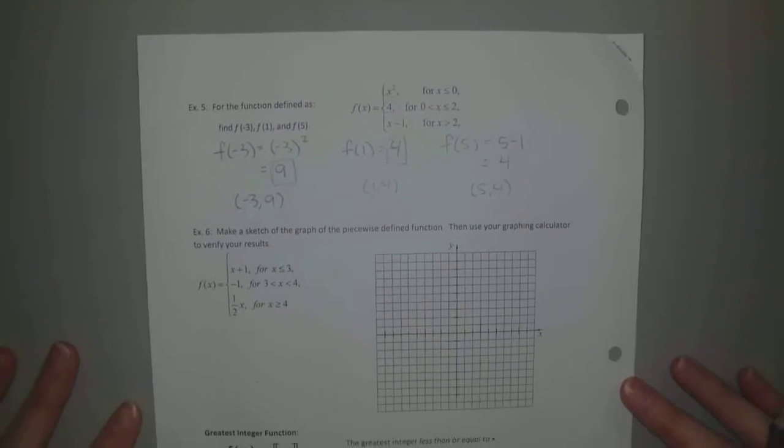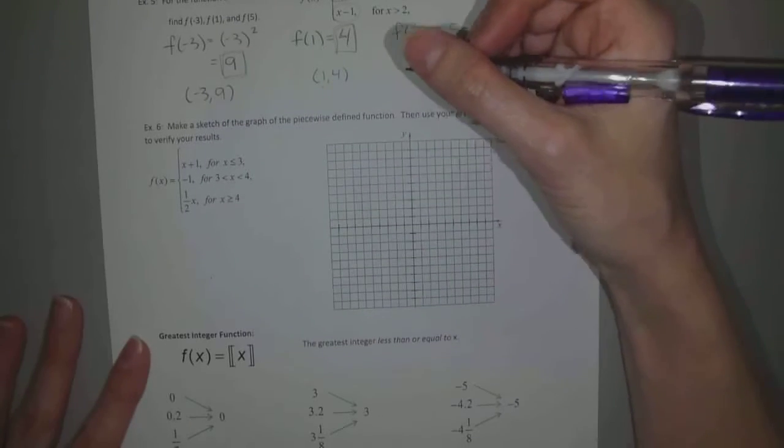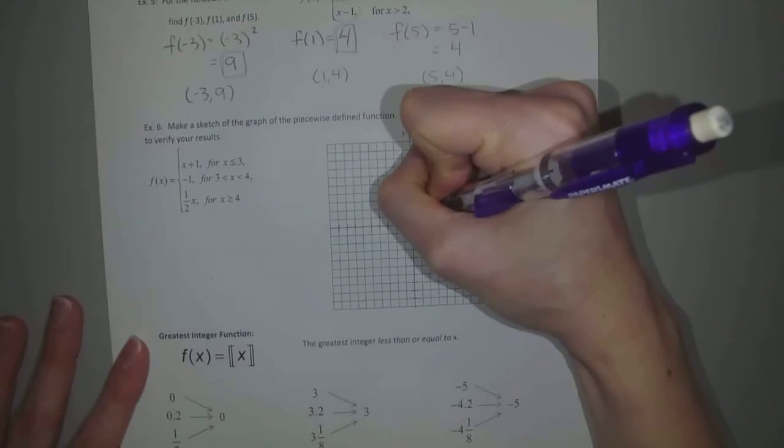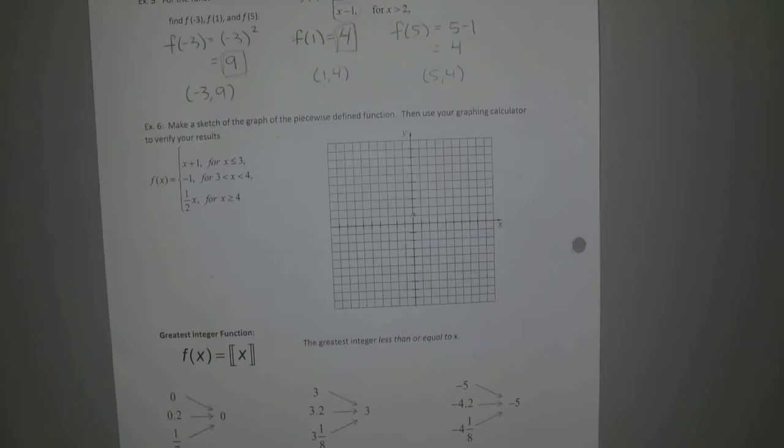So the next part in example 6 is you got to graph it now. It gets hard, okay? So what I do is I just ask myself, I kind of lightly shade what it would be. For example, x plus 1, we know how to graph that. That's an equation of a line where it's going through the y-intercept of 0, 1, right? We're going through the y-intercept of 0, 1. And then what's our slope? Our slope is 1. So we're just going up 1 over 1, up 1 over 1, right?